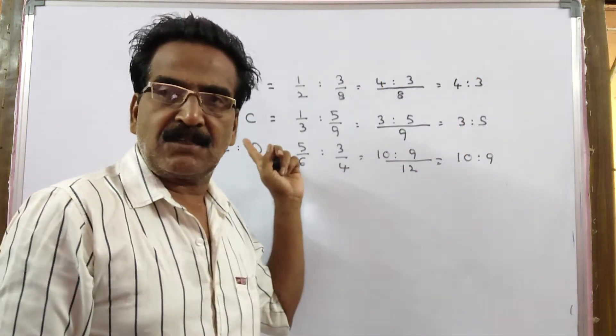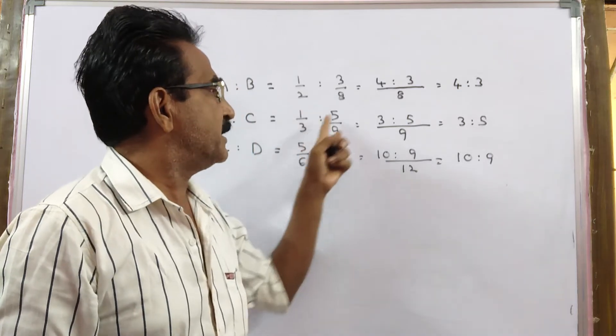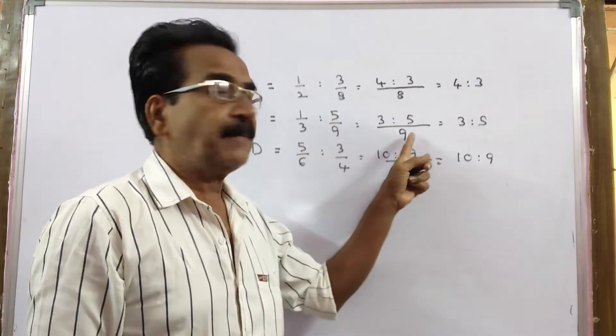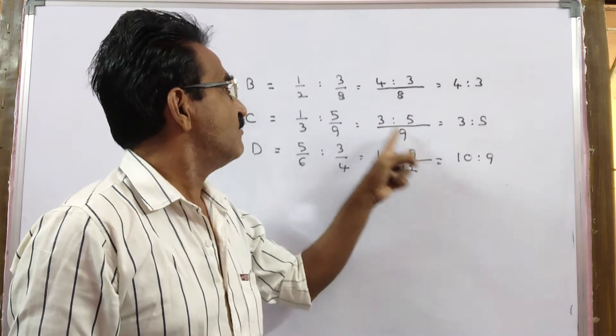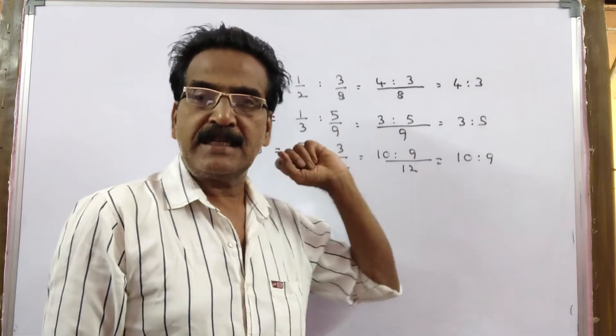In the same way B is to C is also given. B is to C, 1 by 3 is to 5 by 9. LCM 9, 3 3's, 3 1's 3, 9 1's, 1 5 5. 3 is to 5 is B is to C.